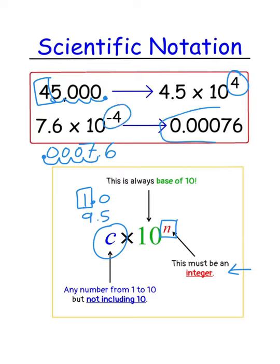If we started with the small number side and are converting, we just move the decimal place over 1, 2, 3, 4 and we still get negative 4. When it's a really small number represented in scientific notation, it's a negative exponent because negative exponents are really like fractions. When it's a really big number, it's going to be a positive exponent because that's a lot of 10s you're multiplying by.